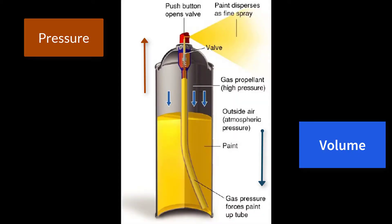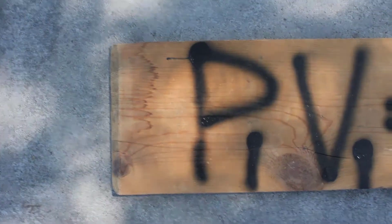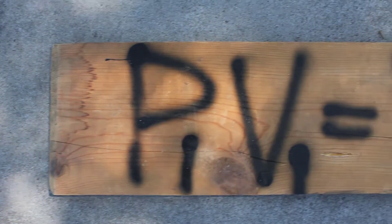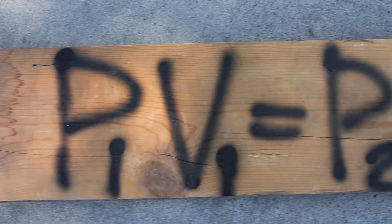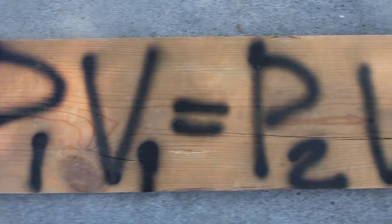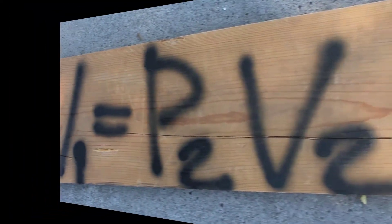In other words, as pressure increases, volume decreases, and vice versa. The equation for Boyle's Law is P1V1 equals P2V2.